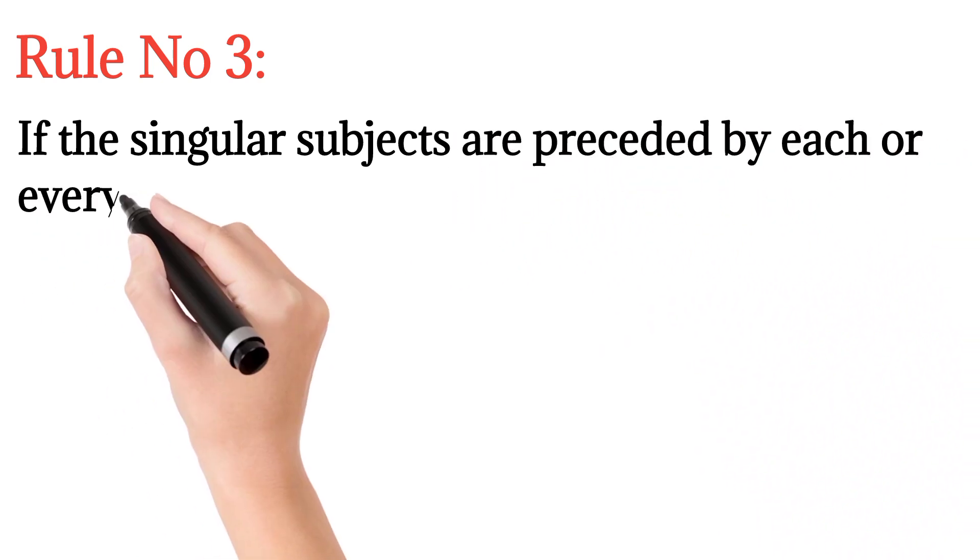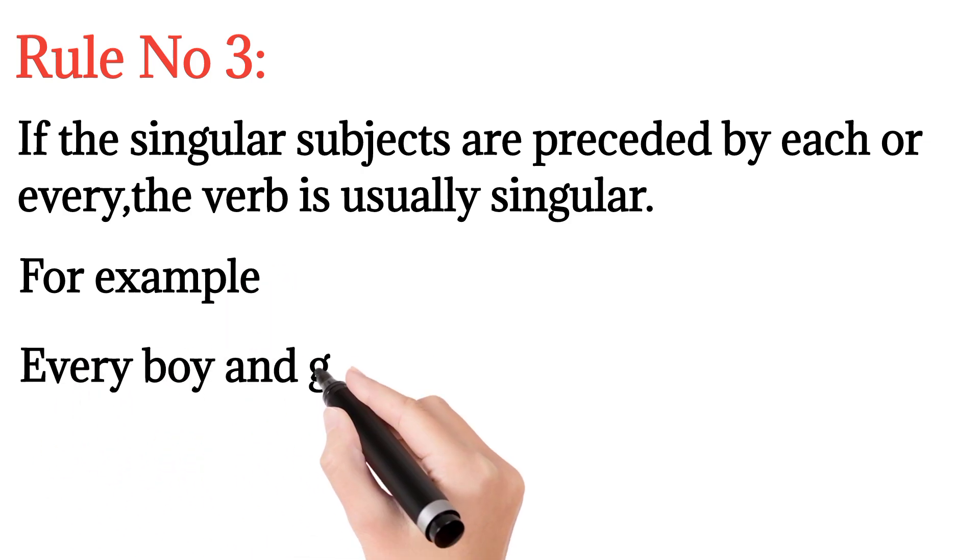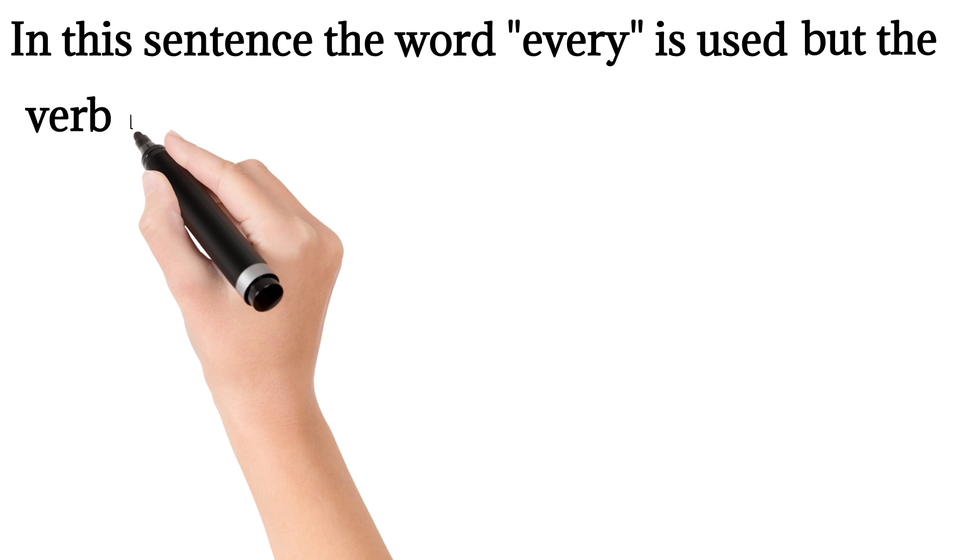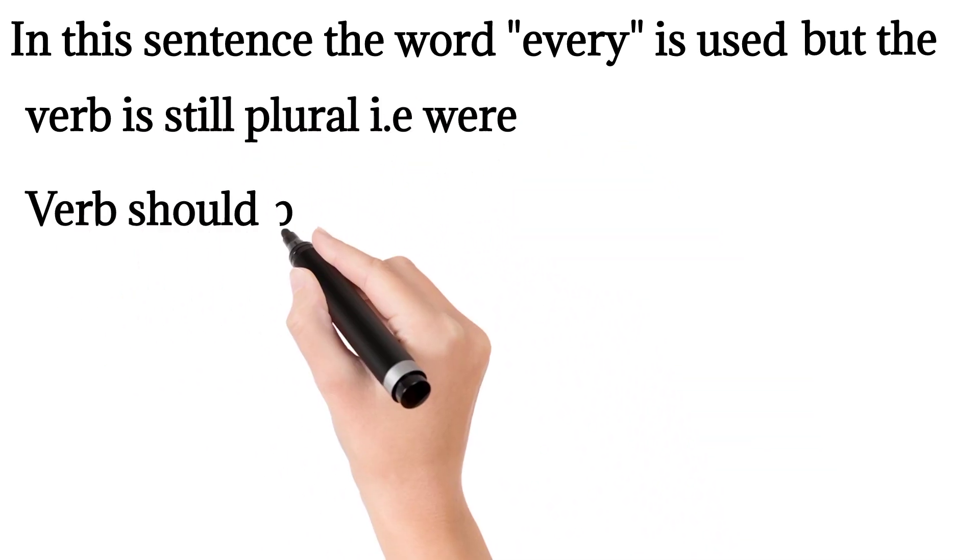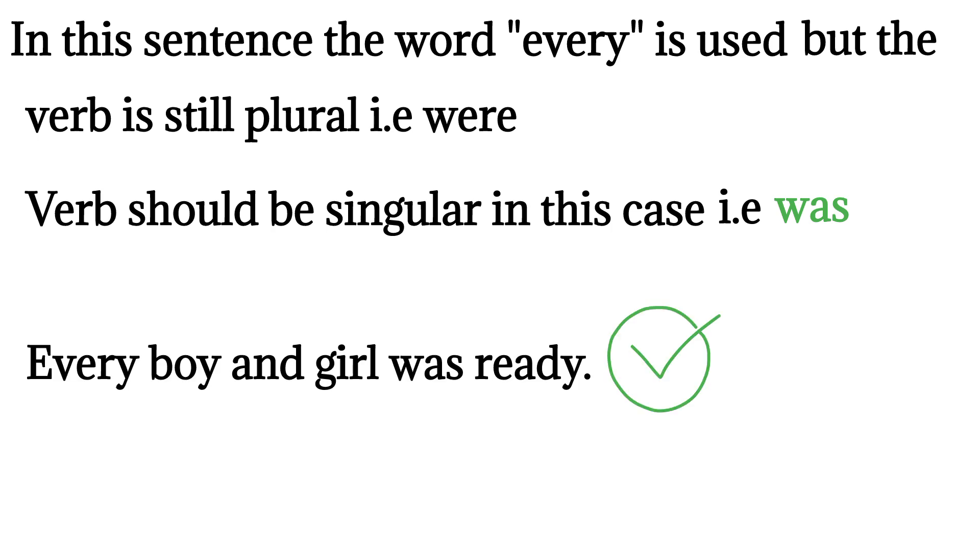Rule number three: If the singular subjects are preceded by 'each' or 'every', the verb is usually singular. For example, 'Every boy and girl were ready' - in this sentence, the word 'every' is used but the verb is still plural. Here the verb should be singular.